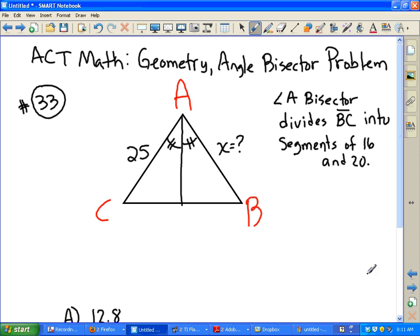OK, here we go. ACT math problem for geometry, the angle bisector problem number 33. We're given a problem where the angle bisector of angle A divides segment BC into two segments of 16 and 20.